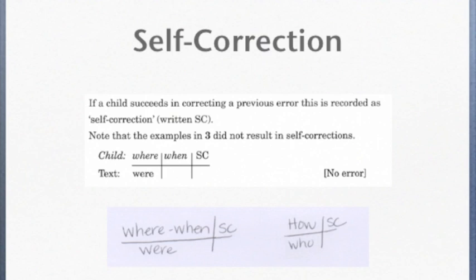Fixing errors is excellent reading behavior. If a child corrects an error, it is recorded with the capital SC above the line. A self-correction is not an error.